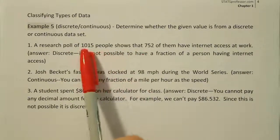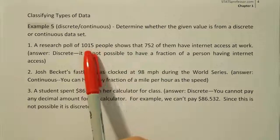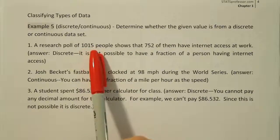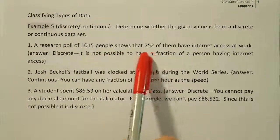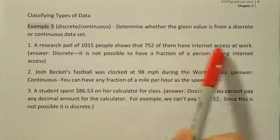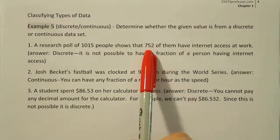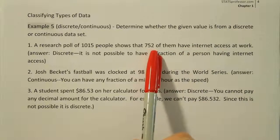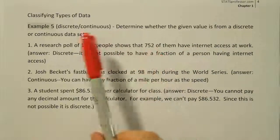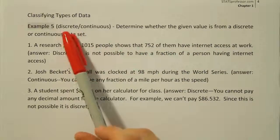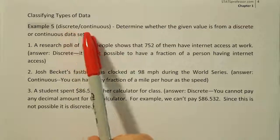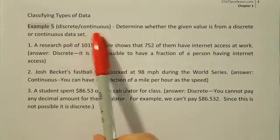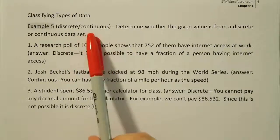When you look at groups of 1,015 people and count up how many of them have internet access, what you want to remember is that discrete data is usually derived from counts and continuous data is usually derived from measurements.